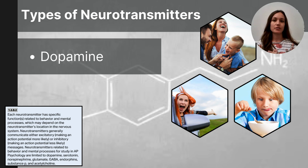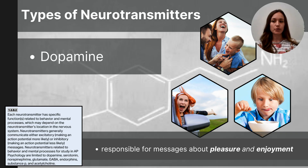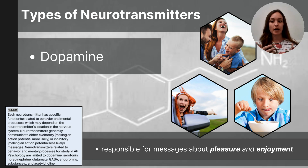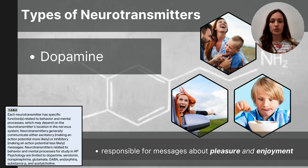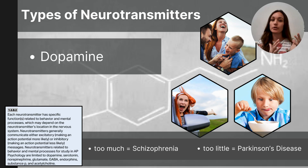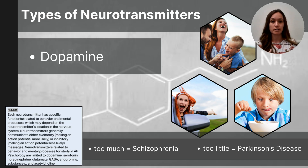Dopamine is a neurotransmitter that serves several functions. You might be most familiar with its role in the experience of pleasure and enjoyment. However, dopamine is also responsible for movement, learning, and attention. Since neurotransmitters can have overlapping messages, I usually tell students to remember dopamine for its function in the brain's reward system and experiencing pleasure. An oversupply of dopamine is linked to schizophrenia, and an undersupply is linked to the decreased mobility experienced in Parkinson's disease.